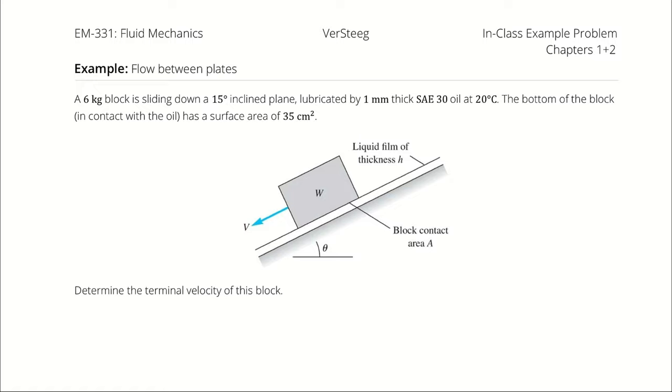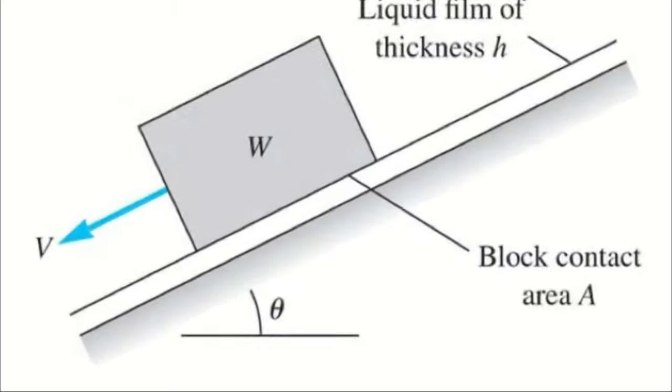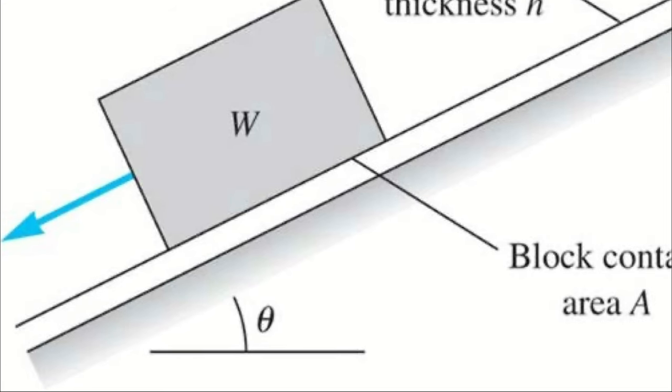I want to determine the terminal velocity of this block. So what we're going to be assuming here is that our velocity profile within the interface between the incline plane and the block looks the same as it did in the previous problem. On our stationary plate, we have no movement of the fluid, and the block is moving down the plane and developing a linear profile within the oil.